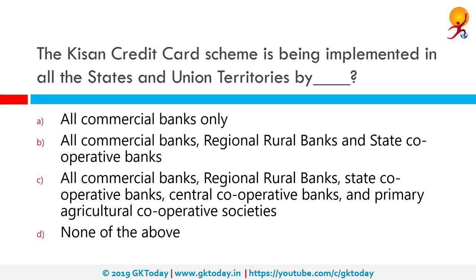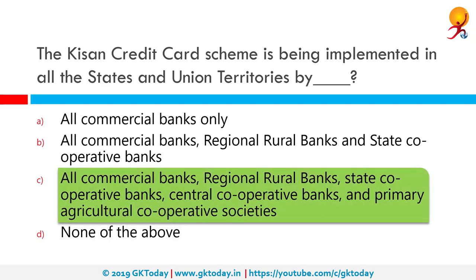The Kisan Credit Card scheme is being implemented in all states and union territories by all commercial banks, regional rural banks, state cooperative banks, central cooperative banks and primary agricultural cooperative societies. The Kisan Credit scheme was introduced in August 1998 by Indian banks. This model scheme was prepared by NABARD on the recommendation of the R.V. Gupta committee to provide term loans for agricultural needs.